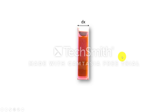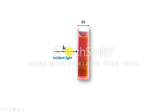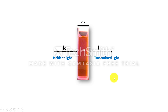Consider an absorbing medium of thickness dx. If a beam of monochromatic light of intensity I₀ is allowed to pass through the medium — intensity is nothing but the number of photons passing through a unit area in a unit time — then some amount of light will be absorbed and the remaining will be transmitted. The intensity of transmitted light will be less than the intensity of incident light.